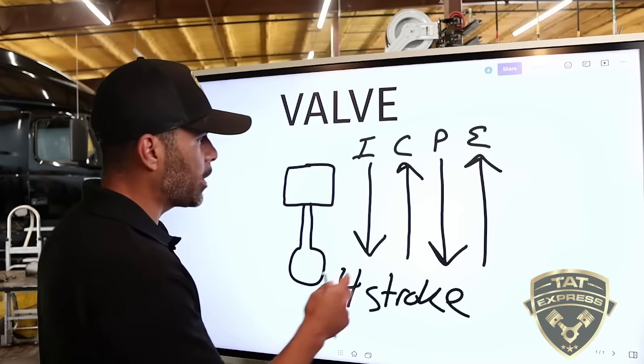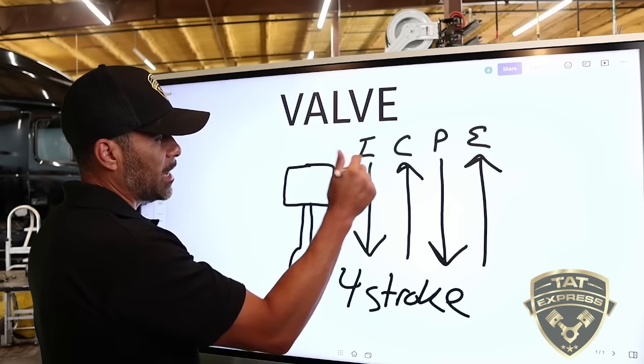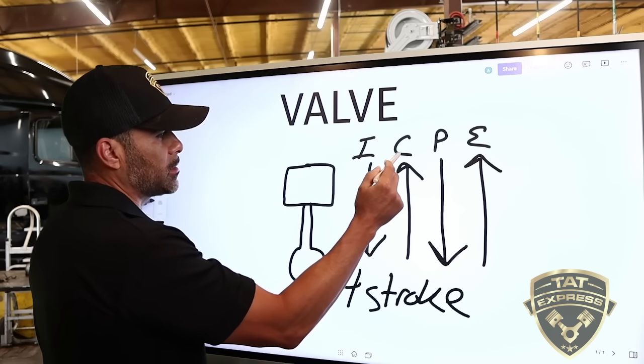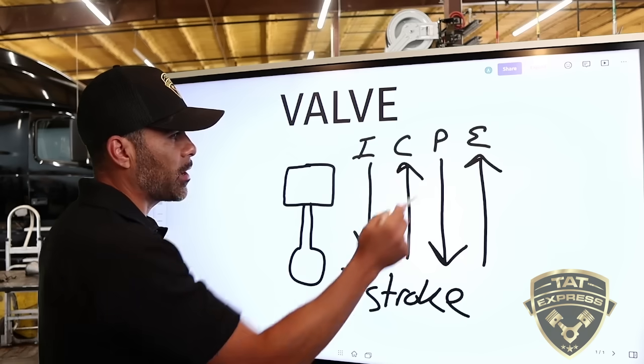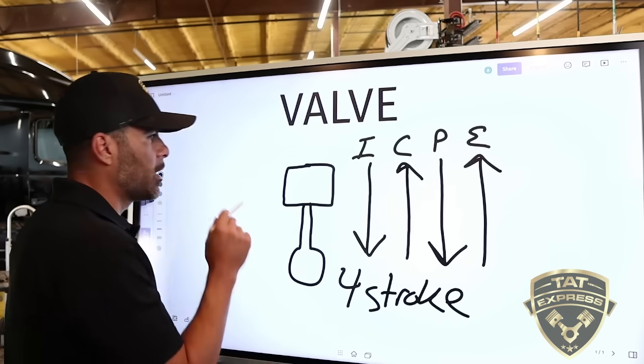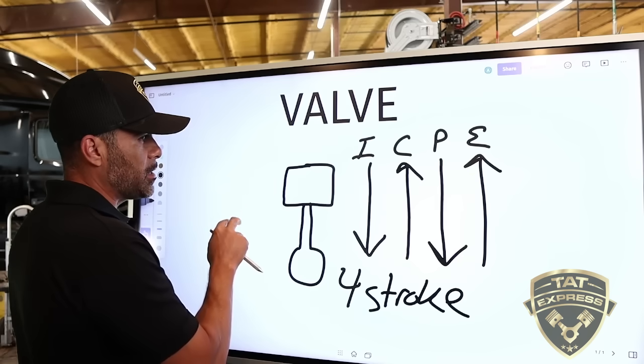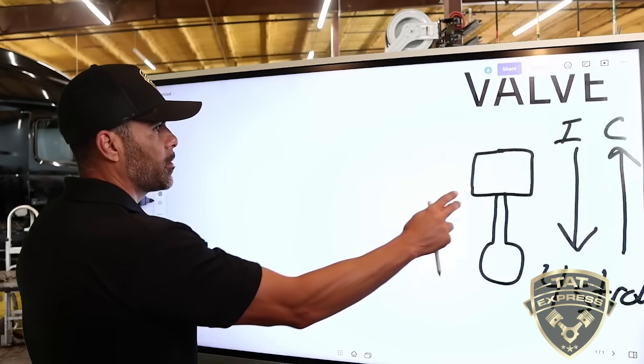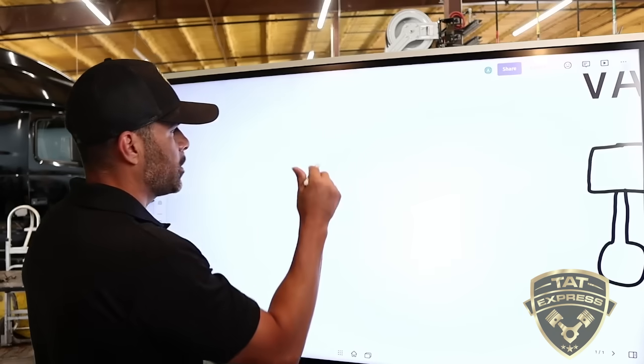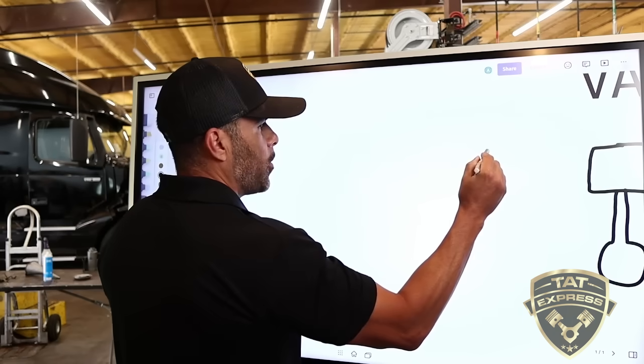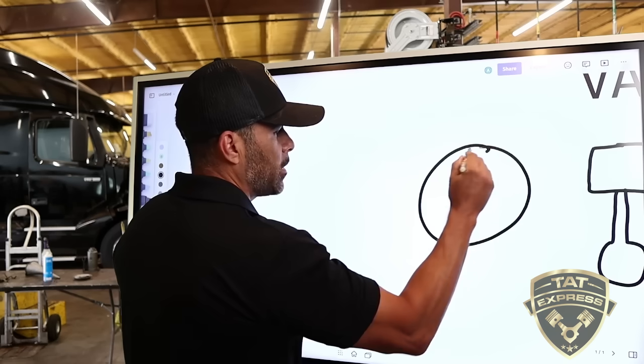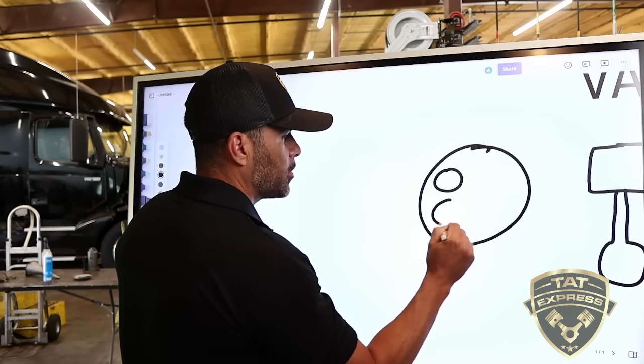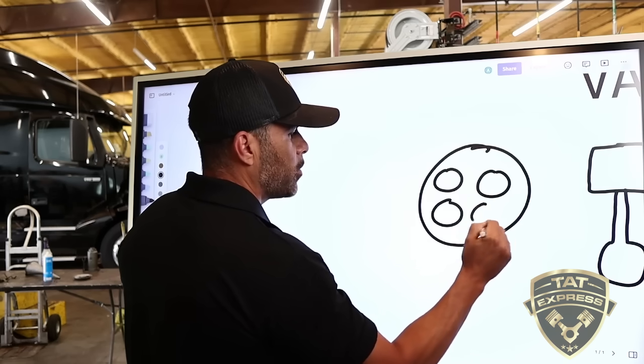So when we look at this, how does this happen? How does the intake open? How does it compress? How does the power happen? And how does the exhaust happen? Now this happens with the cylinder head. If we're looking at the cylinder head, each cylinder head is going to have four valves.